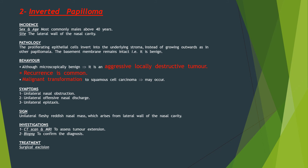Inverted papilloma usually occurs in males above 40 years and comes from the lateral wall of the nasal cavity. Microscopically it is benign, but it is an aggressive locally destructive tumor with very common recurrence, and it may transform into malignant squamous cell carcinoma. The patient complains of unilateral nasal obstruction, unilateral offensive nasal discharge, and unilateral epistaxis. By examination, there is a unilateral fleshy red nasal mass from the lateral wall. CT scan and MRI assess tumor extension; biopsy confirms the diagnosis; and treatment is surgical.